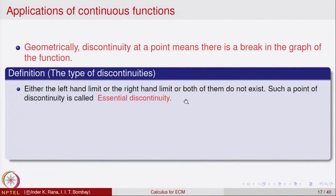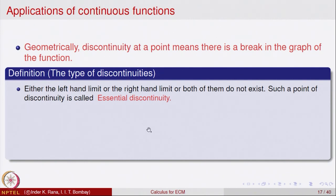Either the left-hand limit does not exist, or the right-hand limit does not exist, or both do not exist. Such a point is called a point of essential discontinuity. This is called an essential discontinuity when at least one of either the left or the right limit does not exist.